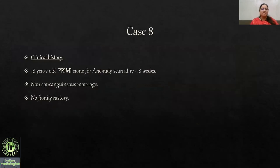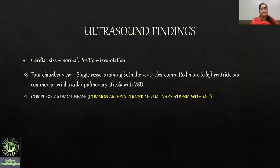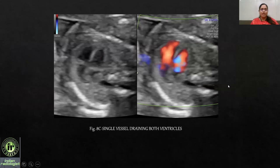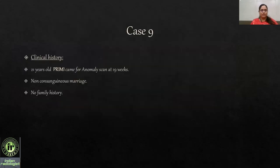Case 8: An 18-year-old primigravida came at 17-18 weeks for an early anomaly scan. Non-consanguineous marriage, no significant family history. A single vessel was seen overriding both ventricles, committed more to the left ventricle, consistent with common arterial trunk or pulmonary atresia with VSD. Color flow confirmed only a single vessel overriding both ventricles.